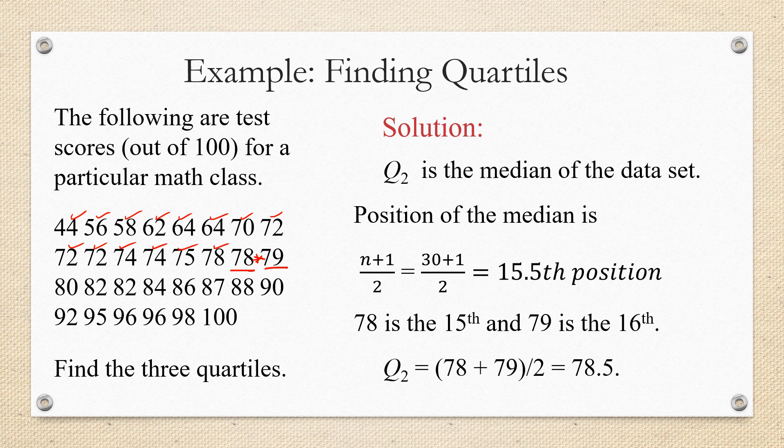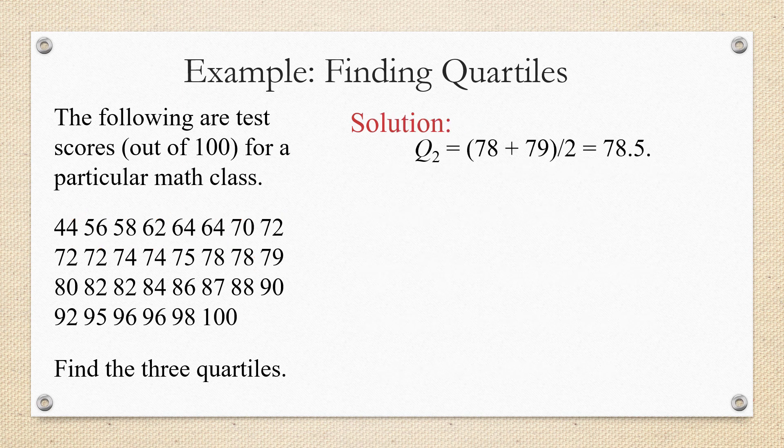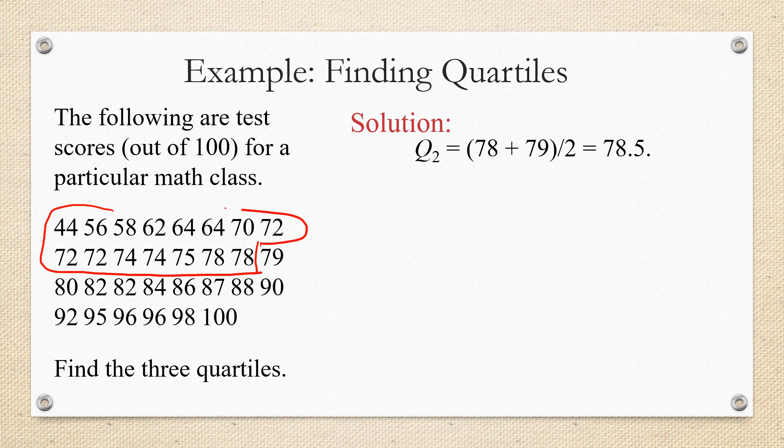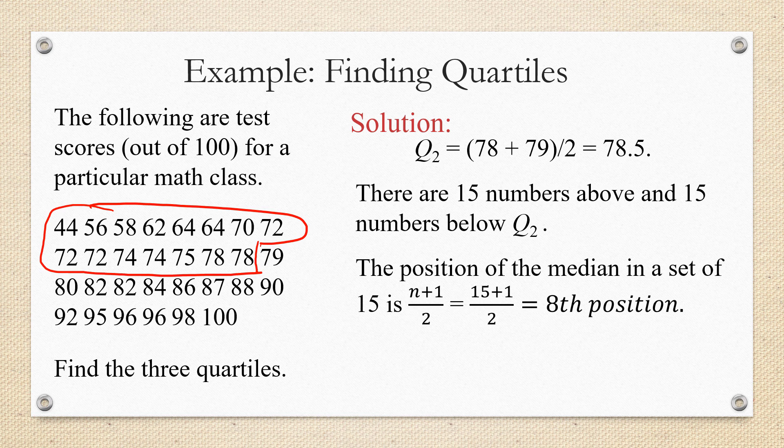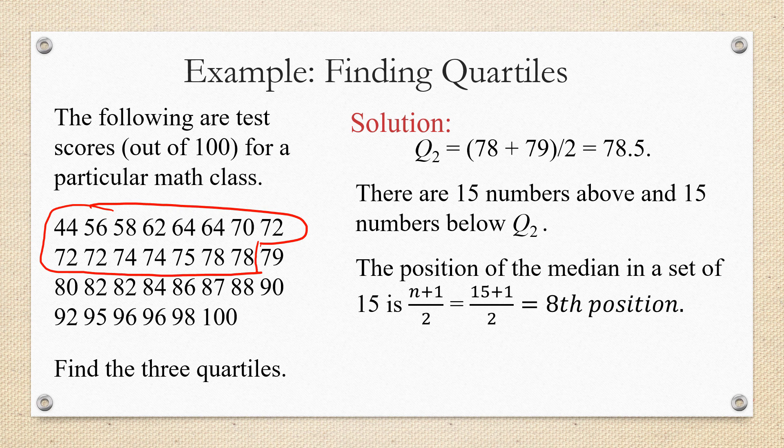That's the second quartile, but we still have to find Q1 and Q3. To do this, we make a note that Q2 is 78.5, which divides our data set exactly in half. Here's the bottom half of our data set, and the rest is the top half. There are 15 numbers above and 15 numbers below Q2. The position of a median in any set of size 15 is going to be 15 plus one over two or eight, the eighth position.